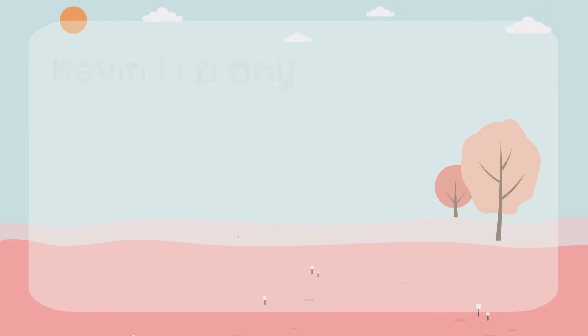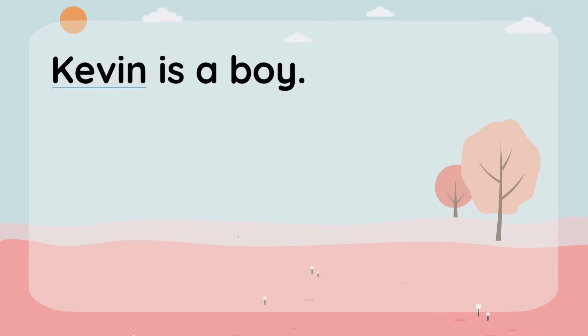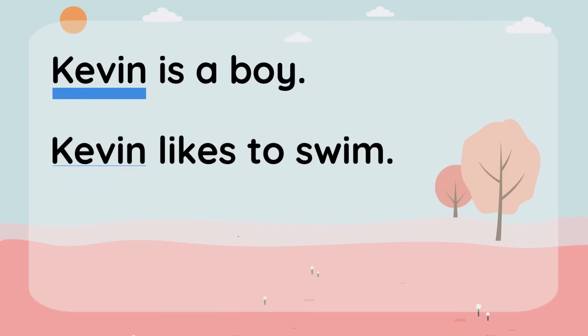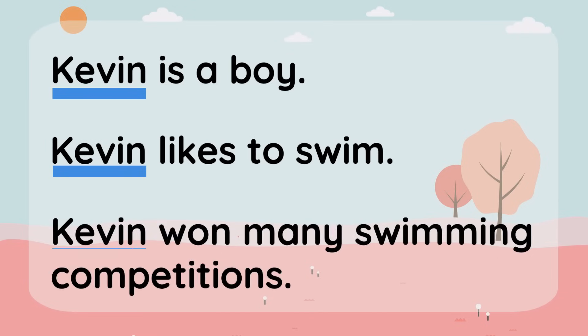Before we start, take a look at these sentences. Kevin is a boy. Kevin likes to swim. Kevin won many swimming competitions. Can you think of a way to make these sentences flow more naturally?